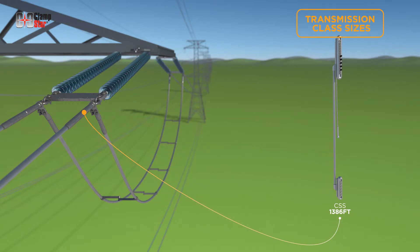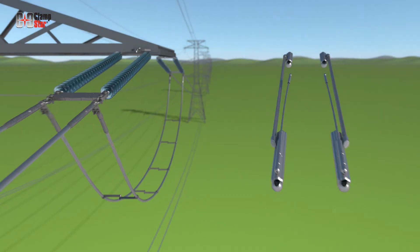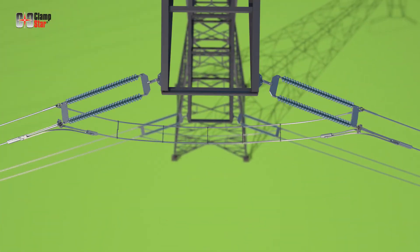Transmission class ClampStar dead-end units are available for left or right configurations. This designation defines whether the shunt conductor is located on the left or right side of the connector. For ClampStar installations on angled dead-end towers, it is preferable to install the shunt conductor of the ClampStar to the inside of the angle such that it does not cross the tension span conductor. One side of the tower will use right-hand units and the opposite side will use left-hand units.